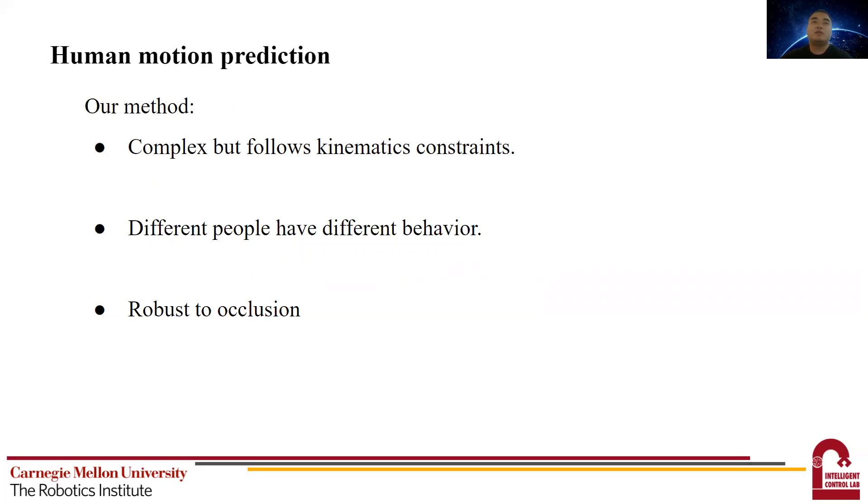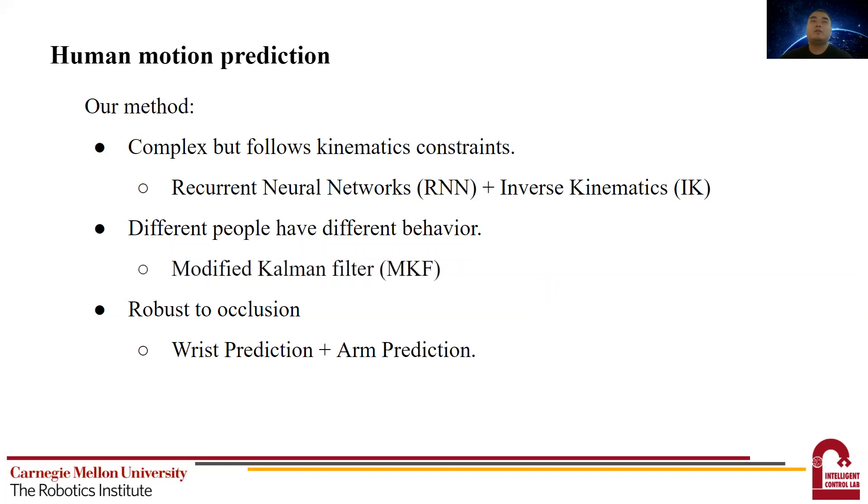In our research, to solve the occlusion problem, we separated the problem to wrist prediction and arm prediction. This decoupled method will not have the error from the occluded joints accumulated to the wrist prediction. To explicitly encode the kinematics constraints, we use the model-based inverse kinematics. This makes the predicted motion strictly follow the physical property of the arm. And in order to account for individual behavior differences, we proposed a modified Kalman filter for robust online adaptation.